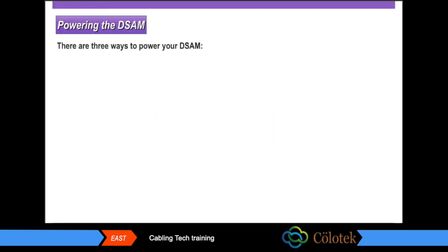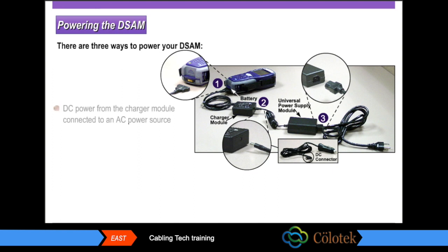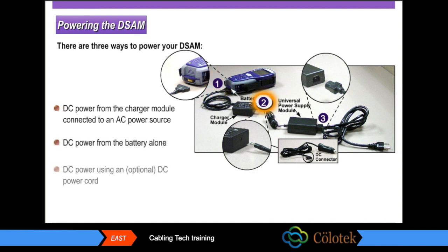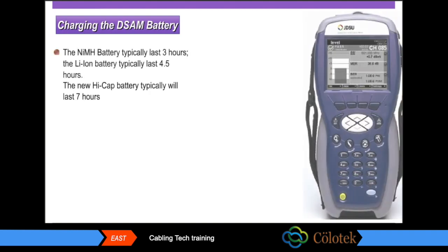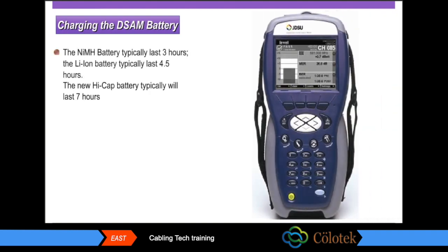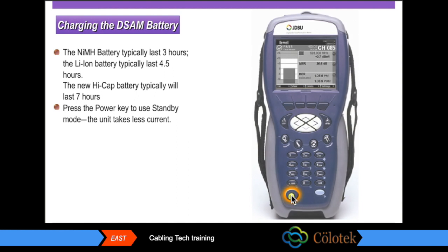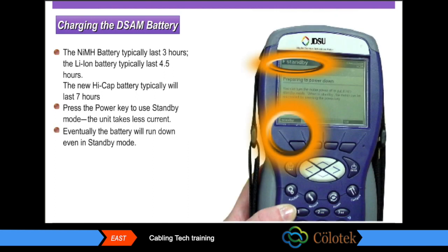There are three ways to provide power to your DSAM: DC power from the charger module connected to an AC power source, DC power from the battery alone, or DC power using an optional DC power cord. The nickel metal hydride battery lasts three hours, the lithium ion battery typically lasts 4.5 hours, and the new high cap battery typically will last seven hours. Press the power key to use the standby mode; the unit will take less current.